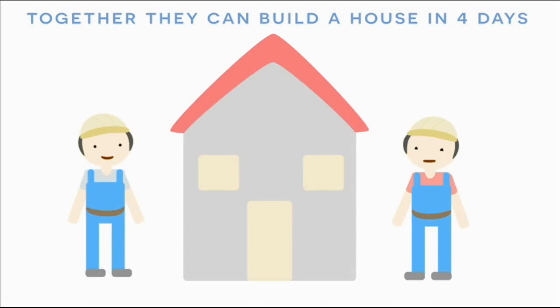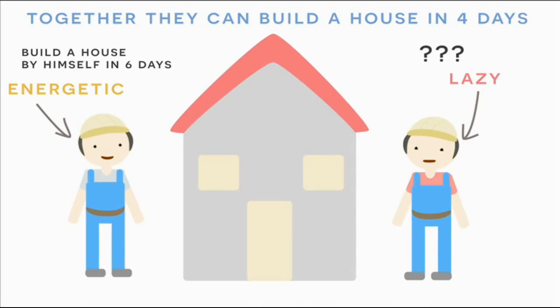However, one of the workers is really lazy and one of the workers is really energetic. The energetic worker can build the house by himself in just six days. So given this information, how long would it take the lazy worker to build the house by himself?